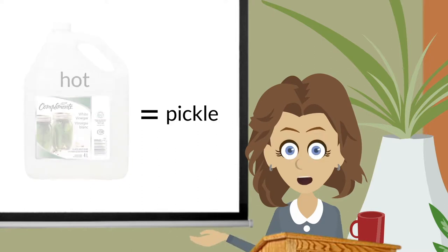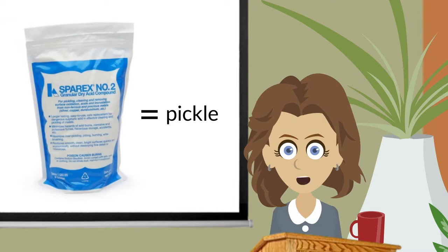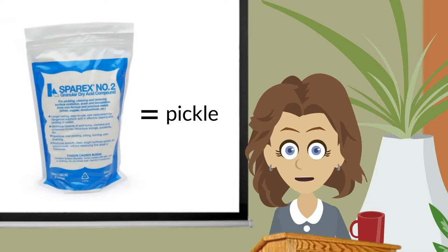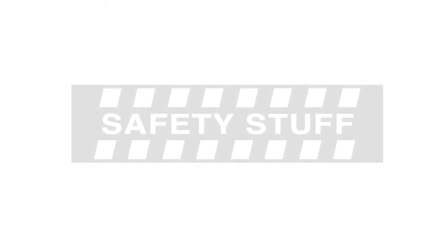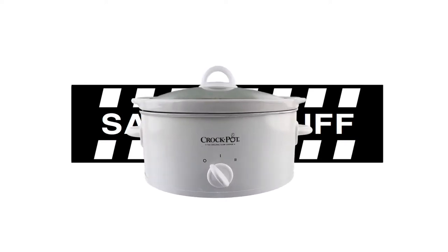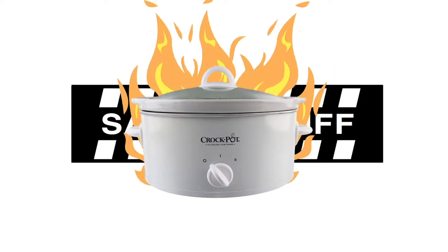These days, vinegar has been replaced by Sparex No. 2, a mild granular acid mixed with water, which can be used cold or hot. Pickle is more effective hot. A crock pot is a good way to keep pickle hot. But never let your pickle boil, as the fumes can be nauseous. Whether you're pickling your copper or cooking your roast, never let your crock pot boil dry, as this could be a fire hazard.